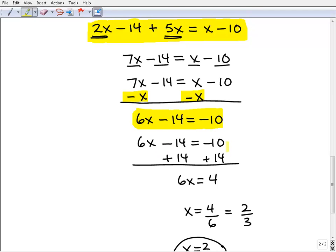So now I want to get all my numbers to the right-hand side of the equation by adding 14 to both sides. Alright, I'm going to get rid of this negative 14 on the left-hand side.